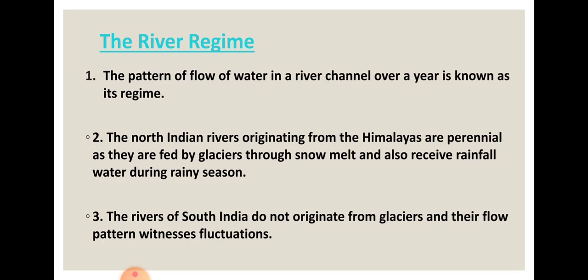That covers the comparison between Himalayan and Peninsular rivers. Now we will start discussion on the river regime. Have you noticed that the quantity of water in a river channel is not the same throughout the year? For example, in the case of the Mahanadi river in Siliguri, the amount of water flowing is not constant — it varies.